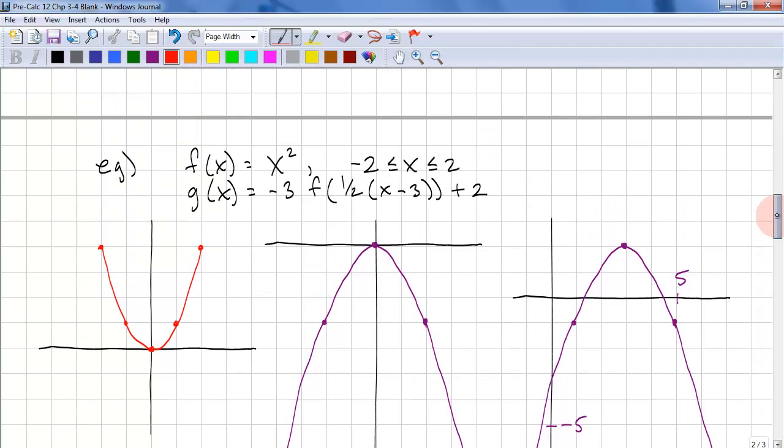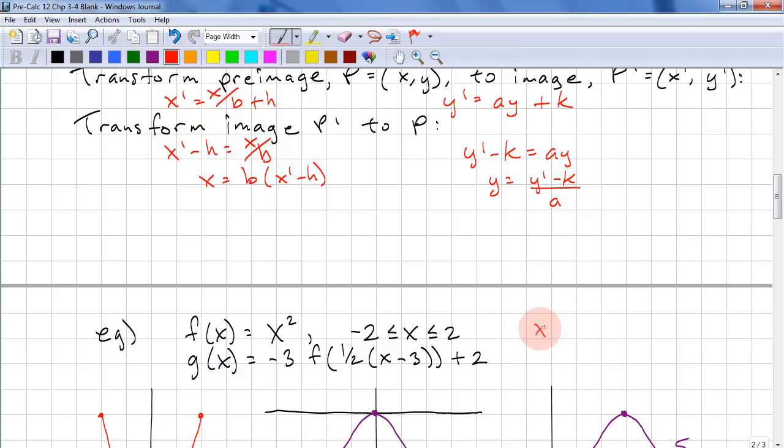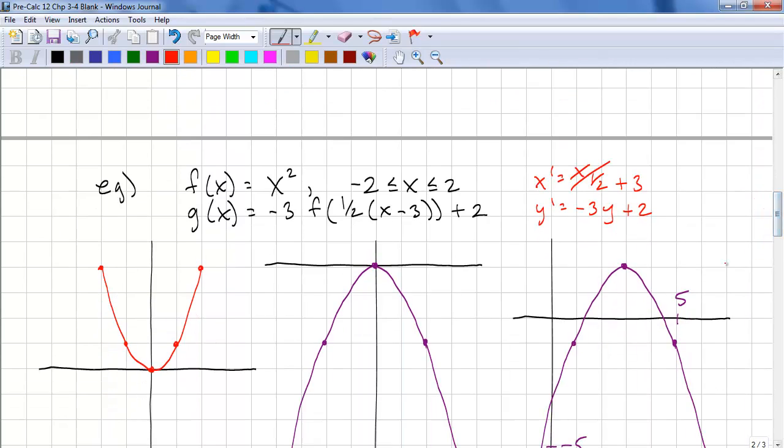The other option is to go straight from here to there. We have x' = x/b, which is a half, plus h, which is 3. And y' = -3 times y plus k, which is 2. So we take (0, 0), plug it in, we get (3, 2), which is good.